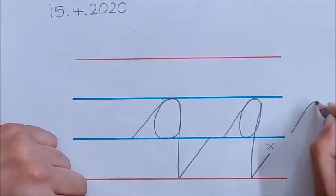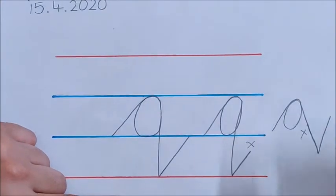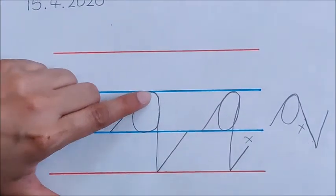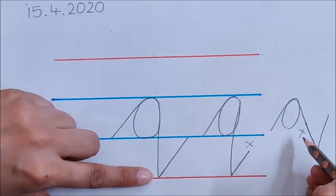And also don't write QQ like this. This is also wrong. Because you have to make a straight line. Don't make a line like this. Don't leave this gap.